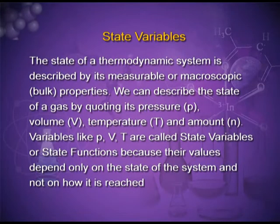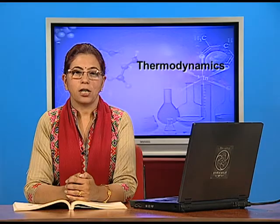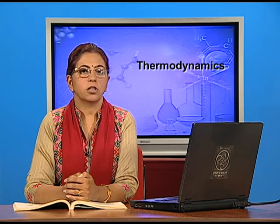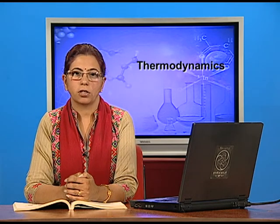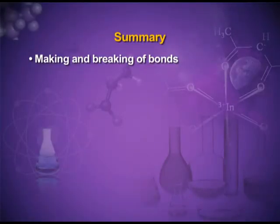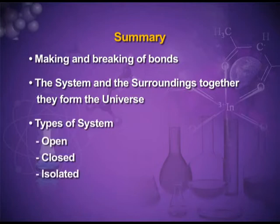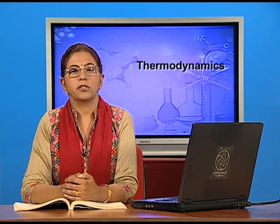Today we have studied that in a chemical process, there is either evolution or absorption of energy, due to the making or breaking of bonds. We have also studied about the system and the surroundings — together they form the universe — and that systems are of many types: open, closed, or isolated. In the next class, we will study about the different thermodynamic parameters. Thank you.